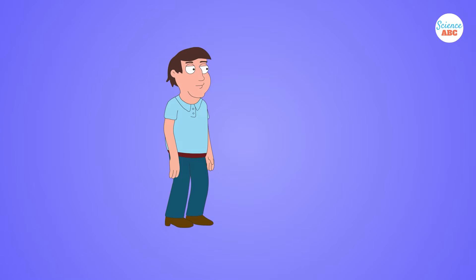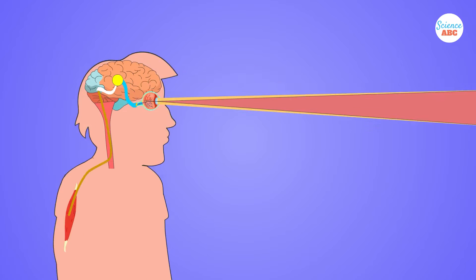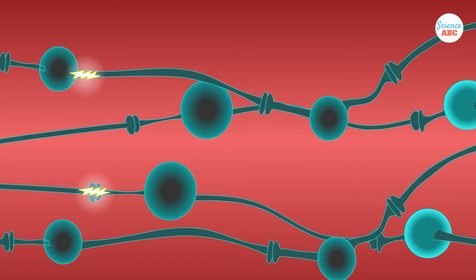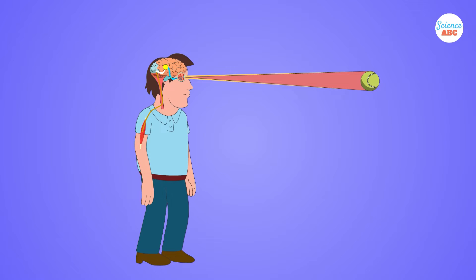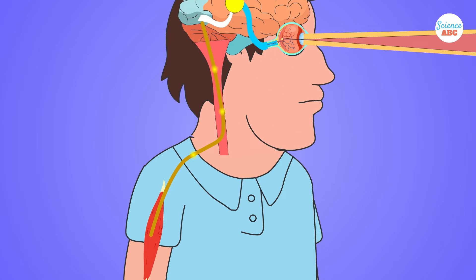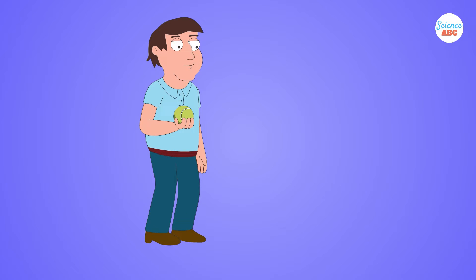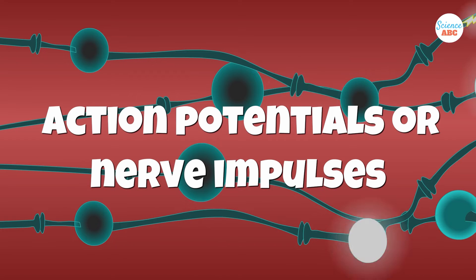All information from our environment — in this case, information from the eye about the size and speed of the ball coming towards you — is converted by nerve cells or neurons into electrical signals that are carried to the brain. Similarly, information from our brain to our body, such as in order to move our hand towards the ball's trajectory, is also sent in the form of these signals. These electric signals are called action potentials or nerve impulses.